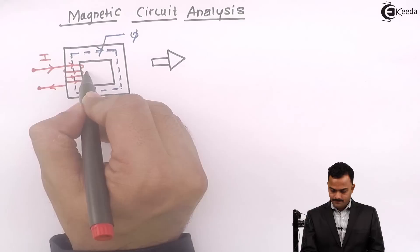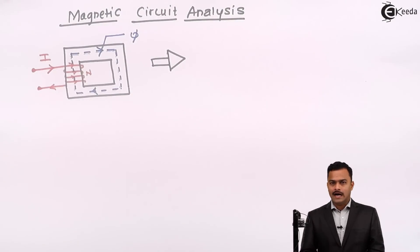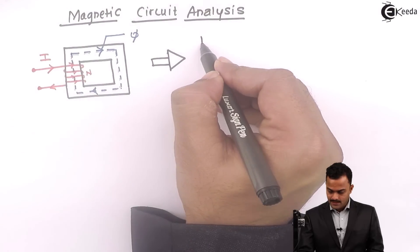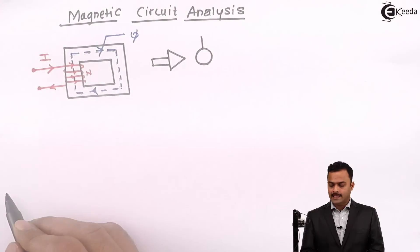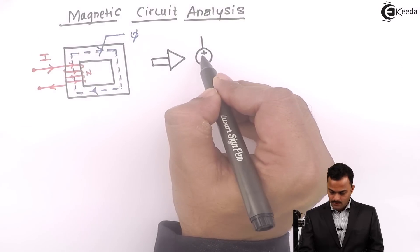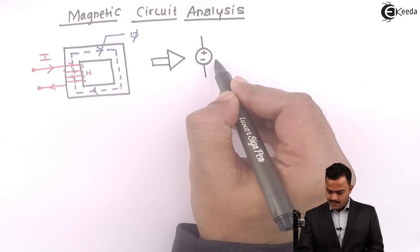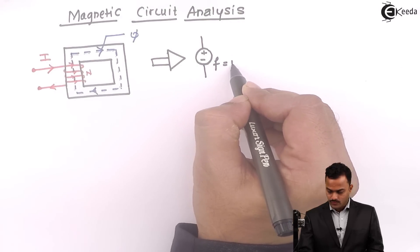For this winding, current carrying is I. Hence, the electric circuit is like this. This MMF is as good as an EMF, and that MMF F equals N times I.